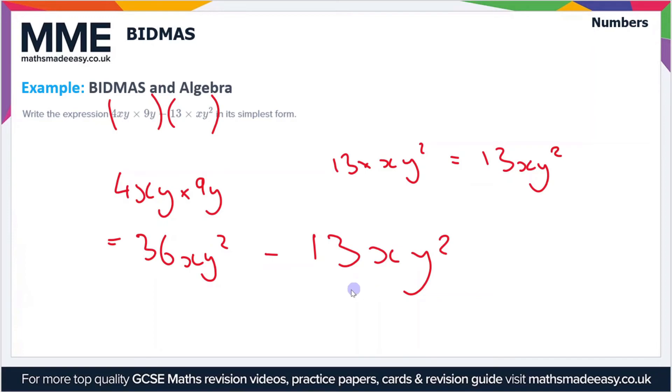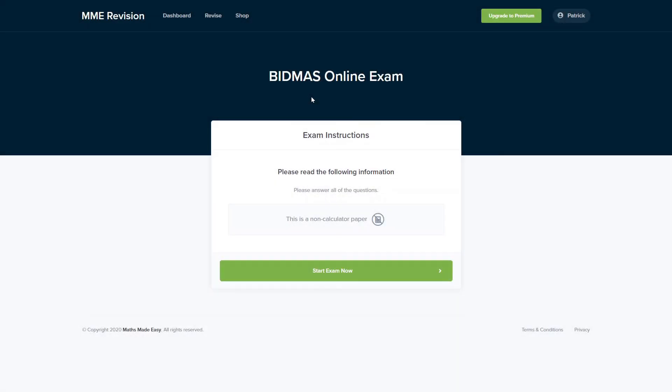36 - 13 is 23, so we've got 23xy² as our final answer.